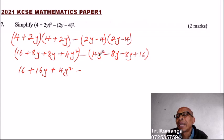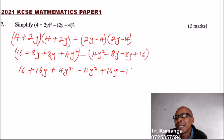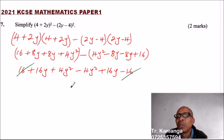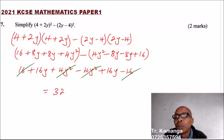When you open the bracket, the signs will change — the ones that are positive will become negative. So we have 16 plus 8y plus 8y giving 16y plus 4y squared. When you open the bracket, 4y squared becomes minus 4y squared, and minus 8 plus minus 8 gives minus 16. So minus and minus changes to positive, giving 16y, and plus 16 becomes minus 16.